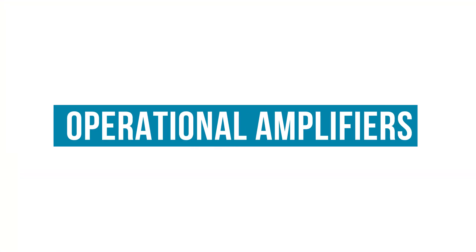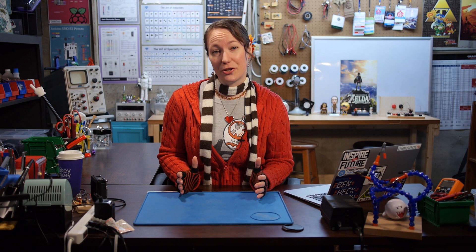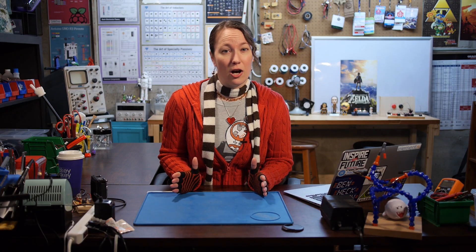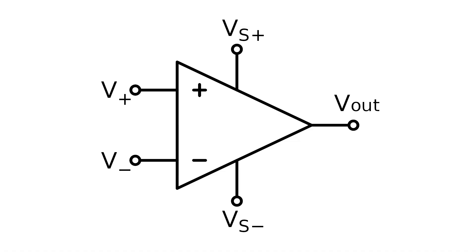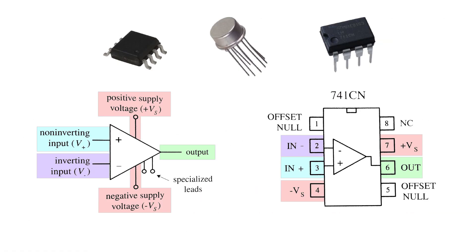Two of the most common types of analog ICs are op-amps and voltage regulators. Operational amplifiers, or op-amps, offer a high gain over a wide range of frequencies. While the chips have eight pins, the schematic symbol only shows five leads. The remaining three pins, not typically represented by the symbol, are specialized and used for fine-tuning. Keep an eye out for that symbol, as op-amps are often incorporated into other ICs.